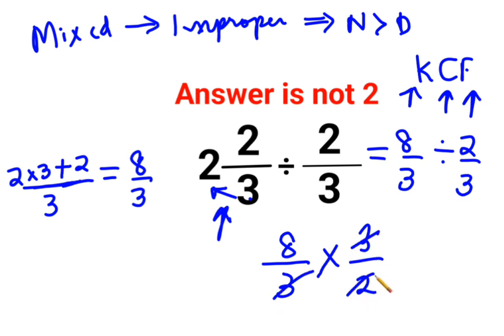So this and this get cancelled. The 3s become 1s, and 8 divided by 2 is 4. So the answer for this question is supposed to be 4.